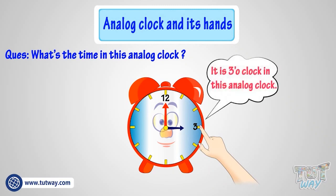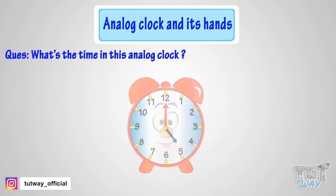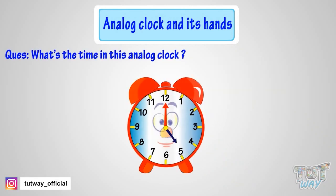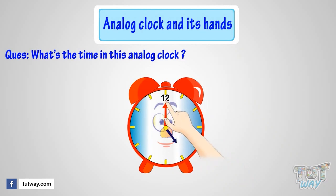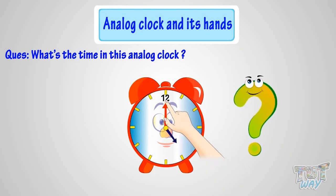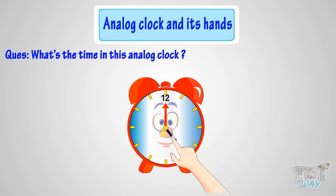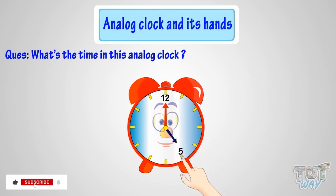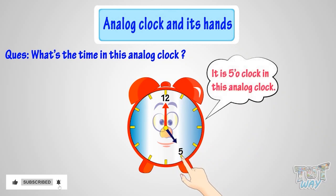Next example. Can you tell me what's the time in this analog clock? When the minute hand is at 12, it is time to the hour. But to which hour? The hour hand tells the hour, and the hour hand is pointing at 5 here. So, it's 5 o'clock in this analog clock.